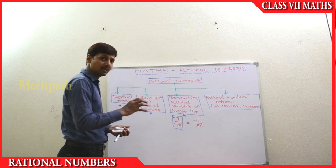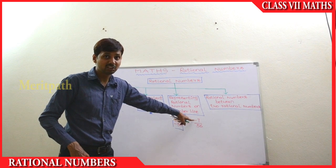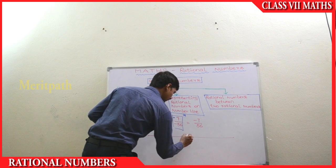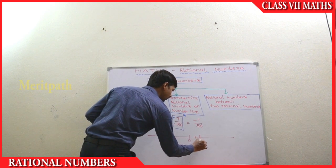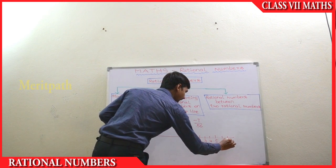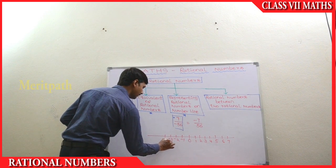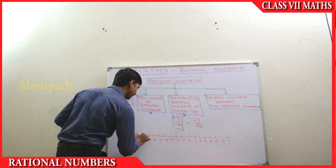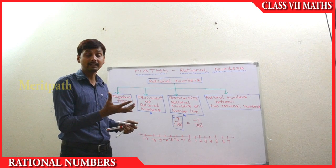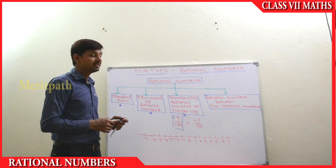So let's draw an integer line first. Because this is a negative number, it lies on the negative side. Positive values: one, two, three, four, five, six, seven. And negative values: minus one, minus two, minus three, minus four, minus five, minus six, and minus seven. Positive values are on the right-hand side, negative values are on the left-hand side, and zero is in between.